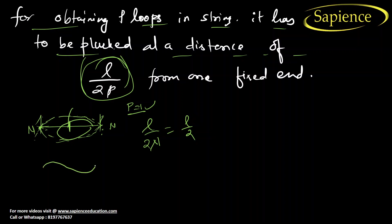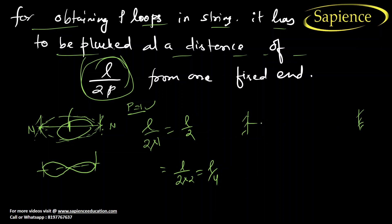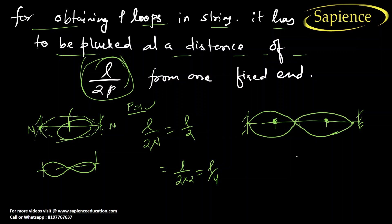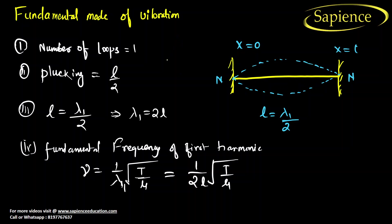If I want two loops, the plucking point is L/(2×2) = L/4. Dividing the string into sections 1, 2, 3, 4 — plugging at L/4 from either end gives two loops. For three loops, the plucking distance is L/6. This is the general formula: plucking distance = L/(2P) for P loops.